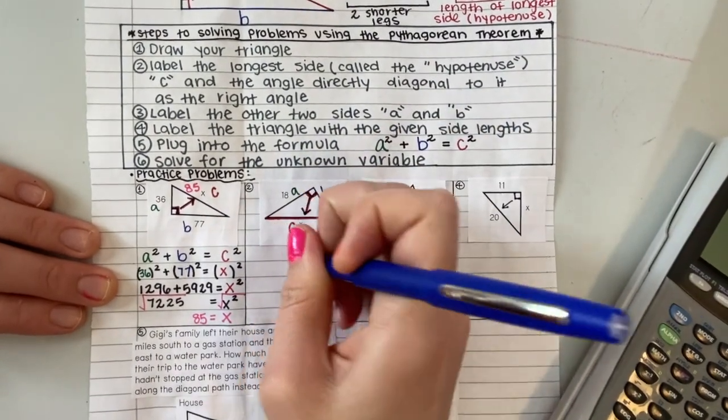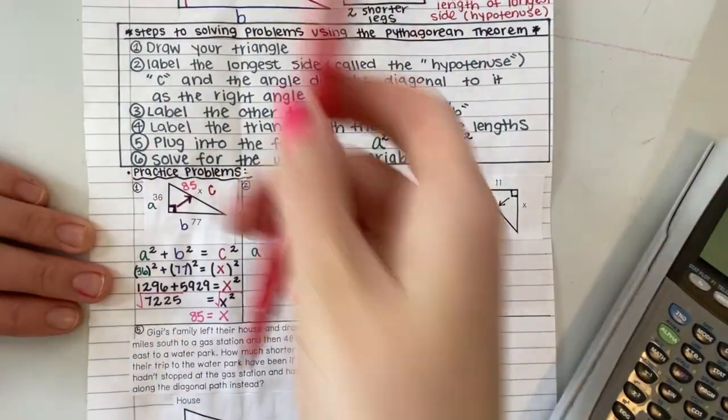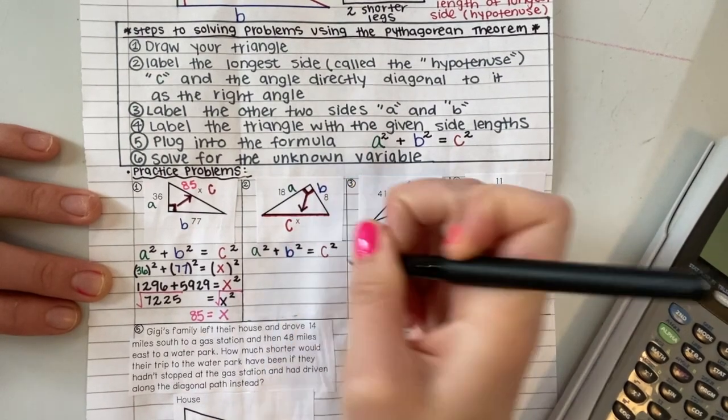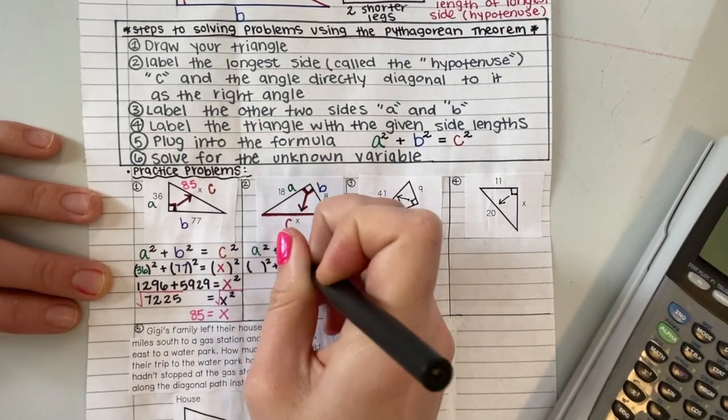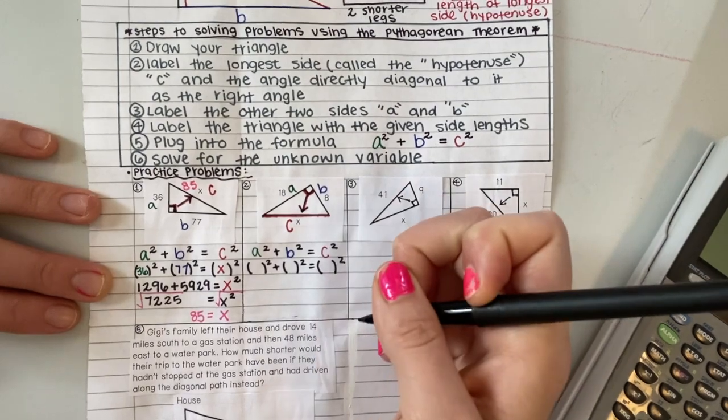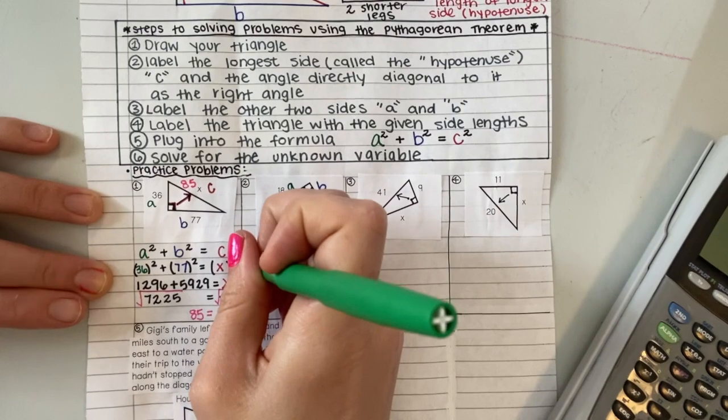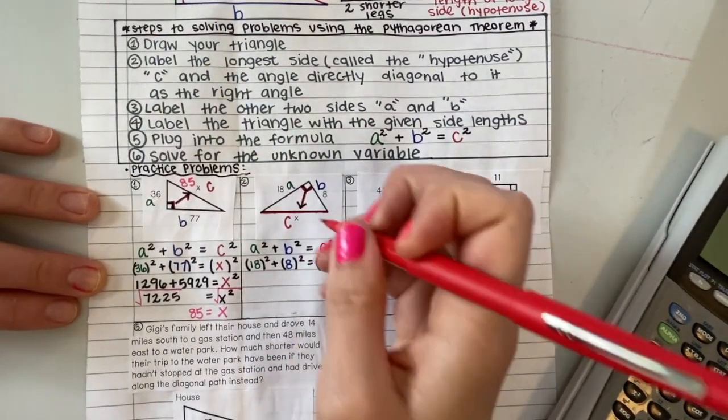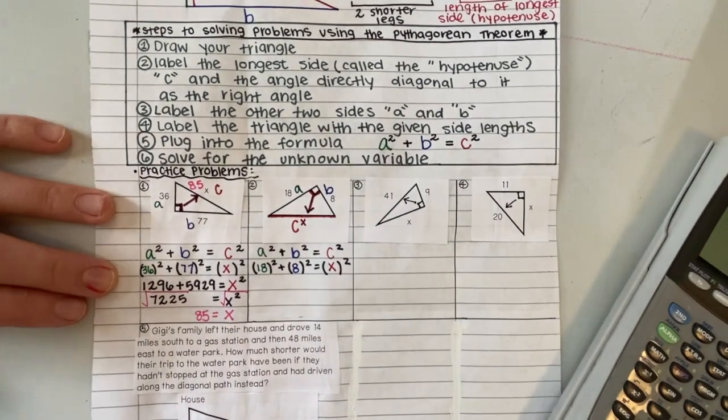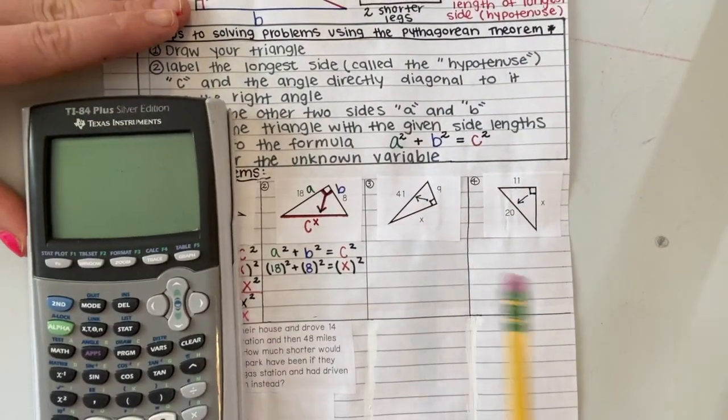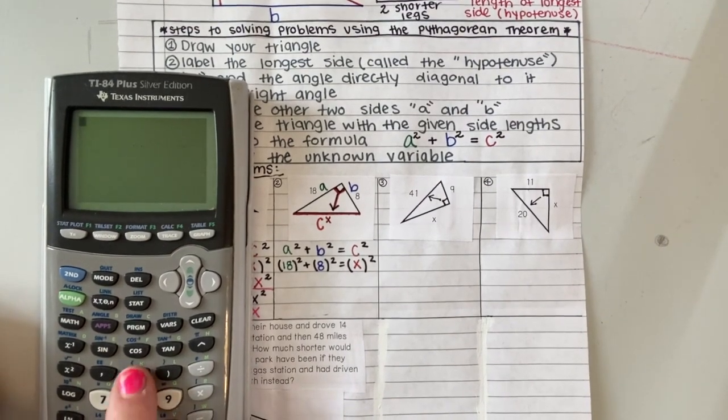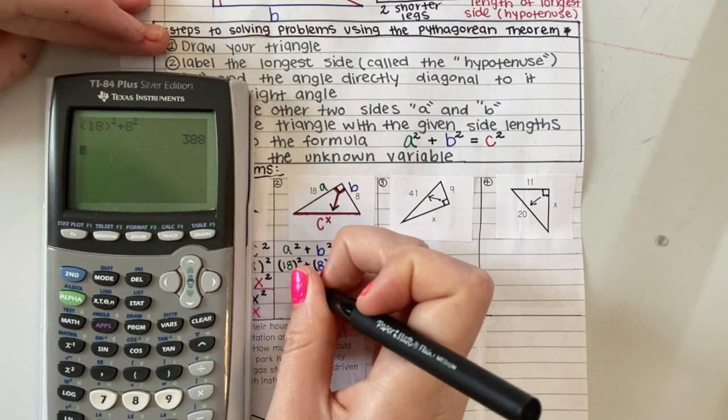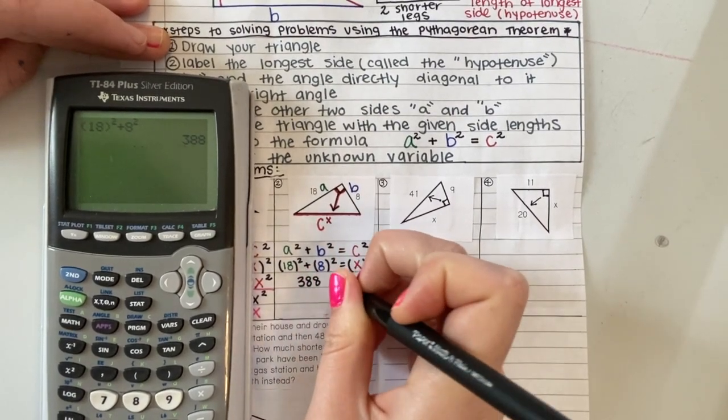I'm going to write out my formula. I'm going to rewrite this again and leave the blanks so that I can plug in everything correctly and I don't forget my little squares. I'm going to plug in for A 18, for B 8, and for C the letter X because we have an X where that number should be. And I'm going to use my calculator. So we're going to do 18 squared plus 8 squared, and I'm going to get 388 equals X squared.